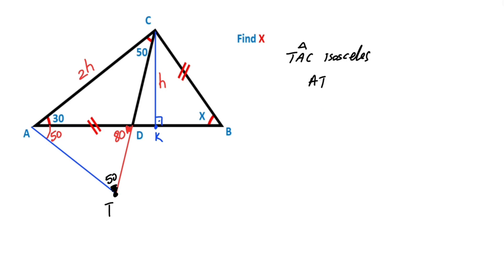Therefore AT must be equal to AC. That means here must also be equal to h. Then if we draw a perpendicular line, we know that the base will be divided into two equal parts — so these two parts must each equal h units.